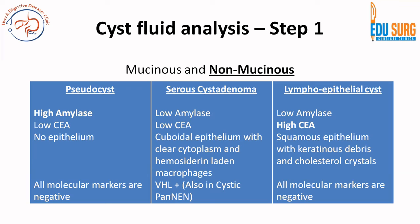The third type of non-mucinous cystic lesion is lymphoepithelial cyst. Lymphoepithelial cyst has high CEA, and this can confuse it with mucinous cystic neoplasm, but the cytology and molecular analysis help in differentiation. The cytology shows squamous epithelium with keratinous debris and cholesterol crystals, and all molecular markers are negative. So lymphoepithelial cyst has high CEA just like mucinous neoplasms, but cytology and molecular studies can help in differentiation. These are the three most common non-mucinous cystic lesions in the pancreas.